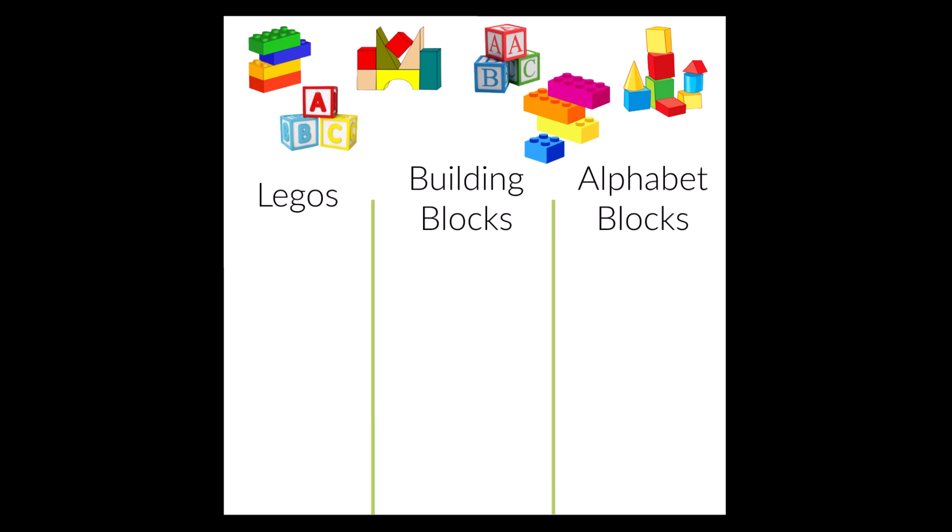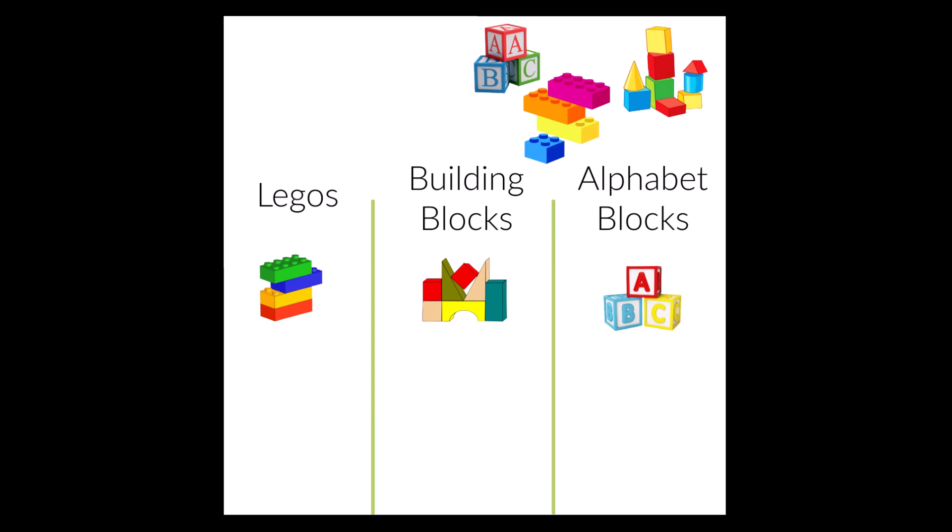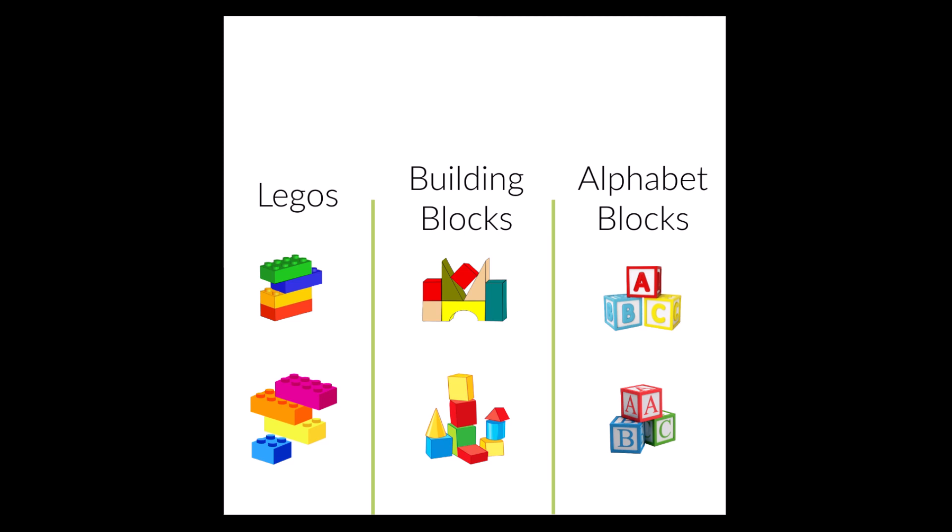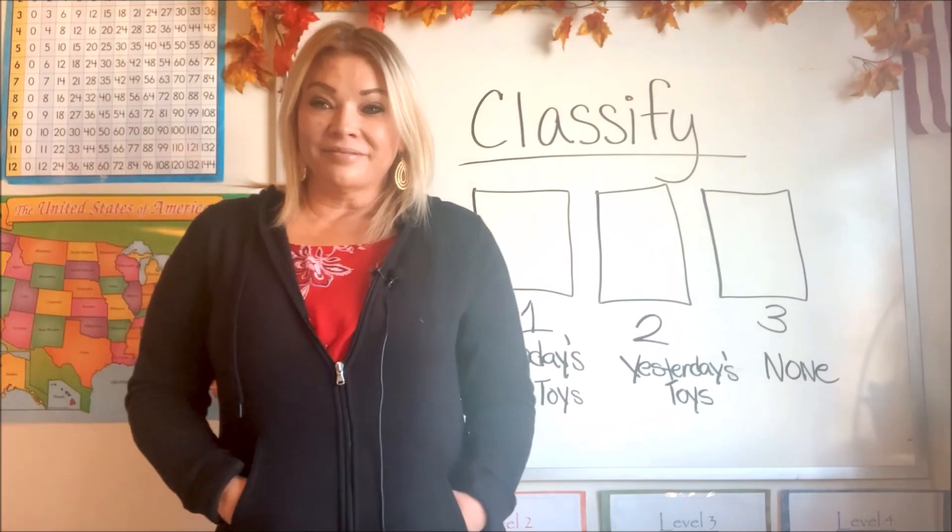Okay, let's start with the first Lego block at the top. Let's put that under Legos. Next, let's do the alphabet block. It goes right in the category that says alphabet blocks. Good job. All right, where do the building blocks at the top of the page go? You got it. It goes under building blocks. Let's do the last three blocks. We have another set of alphabet blocks. We have another Lego set, don't we? And our last group goes under building blocks. Good job.